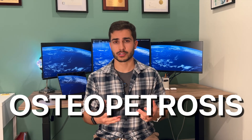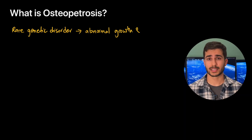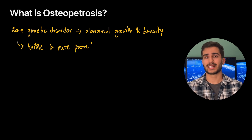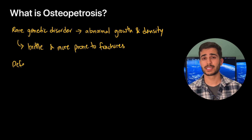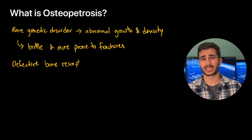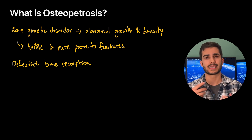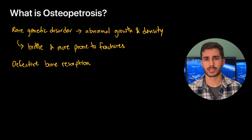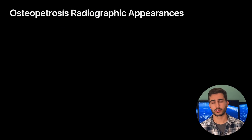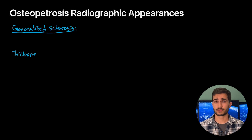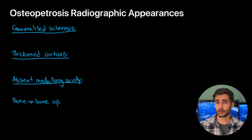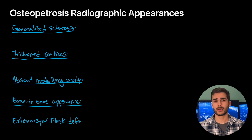Now let's talk about osteopetrosis — a very similar sounding word, but almost the complete opposite of osteoporosis. It's a rare genetic disorder that causes bones to grow abnormally and become overly dense. This defective bone resorption — the inability to remove old bone — is characteristic of osteopetrosis and is quite obvious on a radiograph. Key radiographic signs include generalised sclerosis, thickening of the cortices, absent medullary cavity, bone-in-bone appearance, and the Erlenmeyer flask deformity.